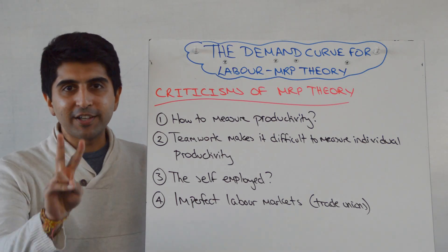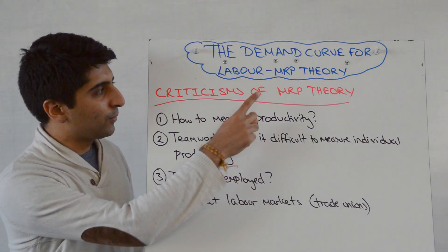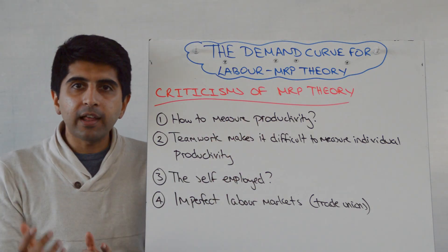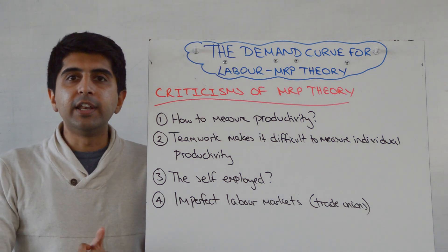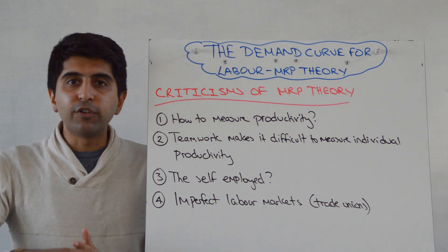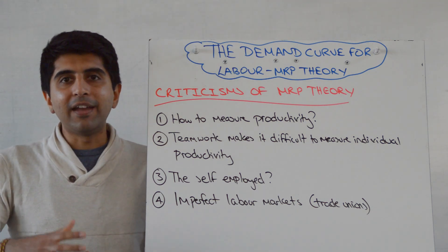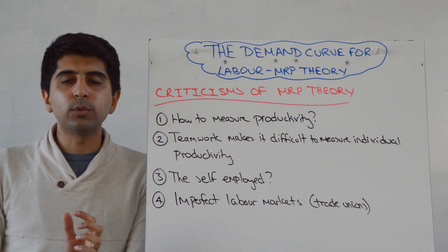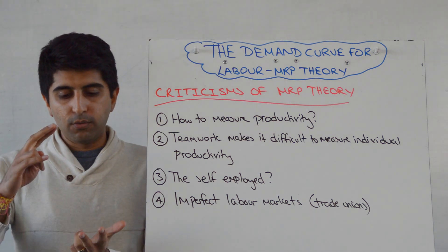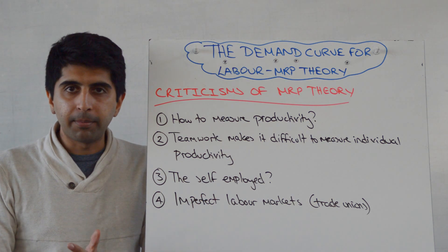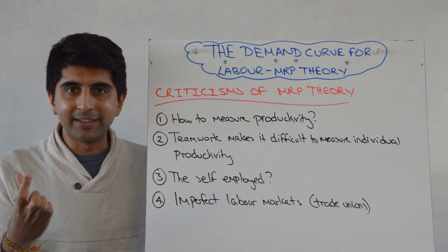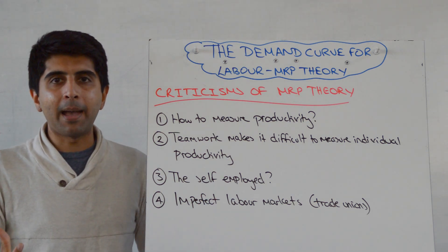Hi everybody. So far we've learned two key things when it comes to MRP theory. MRP will tell a firm at a given wage rate the number of workers it should employ, and for workers, if their MRP is at least equal to the wage, they will get a job. So workers are paid according to MRP, and the number of workers firms will employ is determined by MRP.